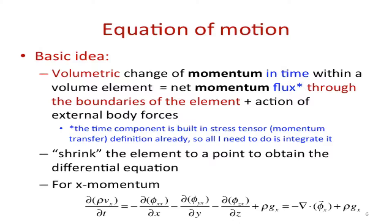The components are phi-xx, phi-yx, and phi-zx. They describe how momentum crosses across x, y, and z planes. So basically we get this balance that is now divergence of the vector (phi-xx, phi-yx, phi-zx), plus the action of external body force.